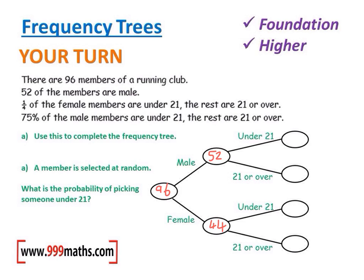A quarter of the female members are under 21. A quarter of 44 is 11, and the rest are 21 or over, so that would be 33. If 11 of them are under 21 and there are 44 altogether, then 33 must be 21 or over.